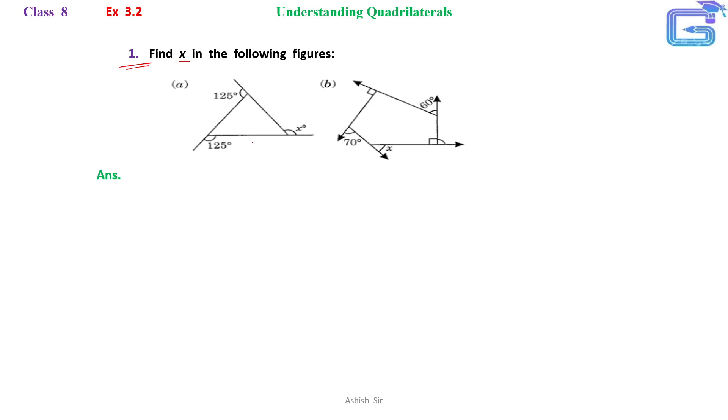Here we have been given a polygon with the exterior angles having 125, 125, and one unknown angle that is x.